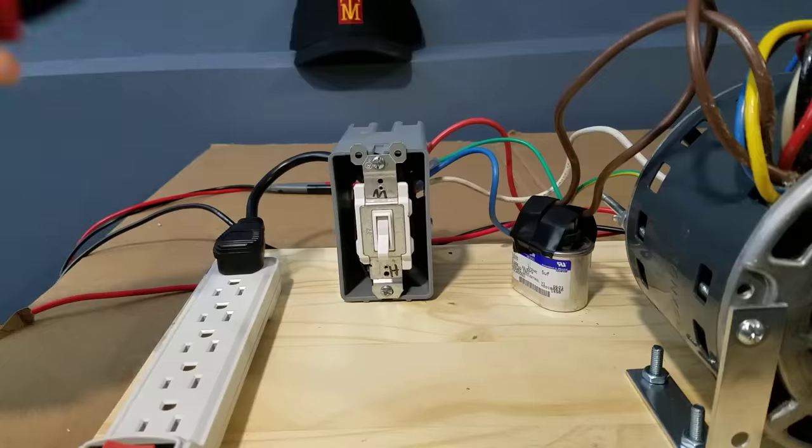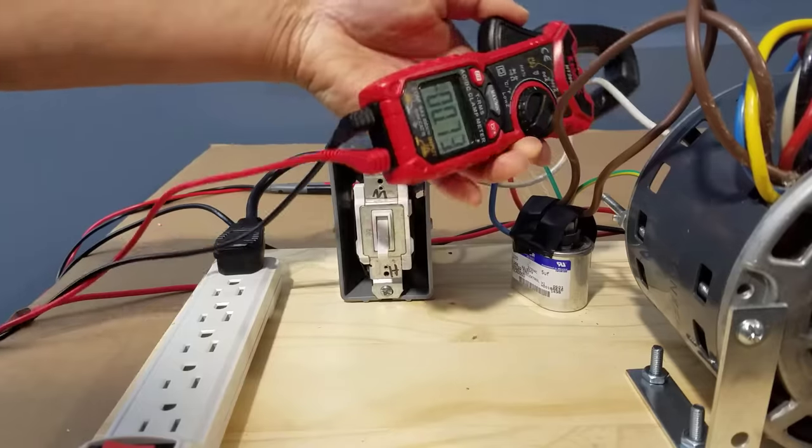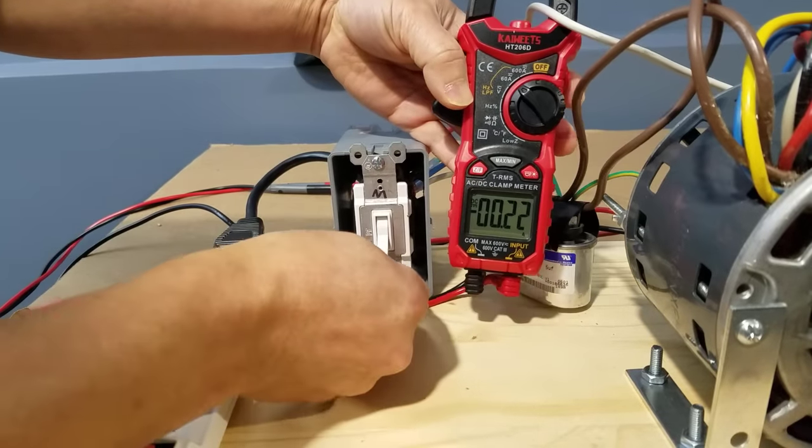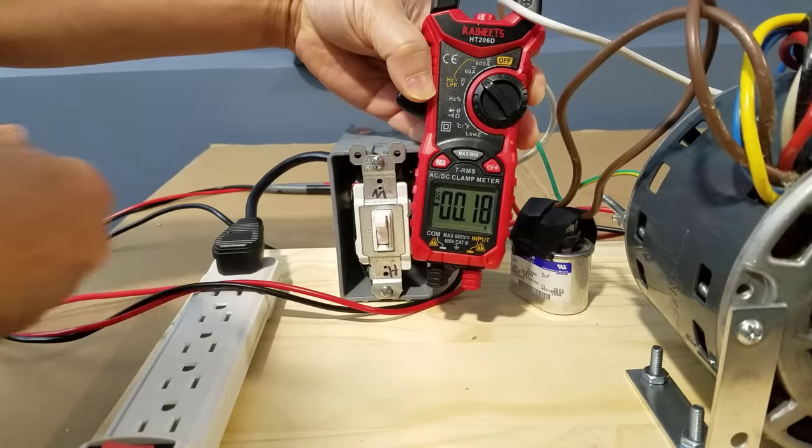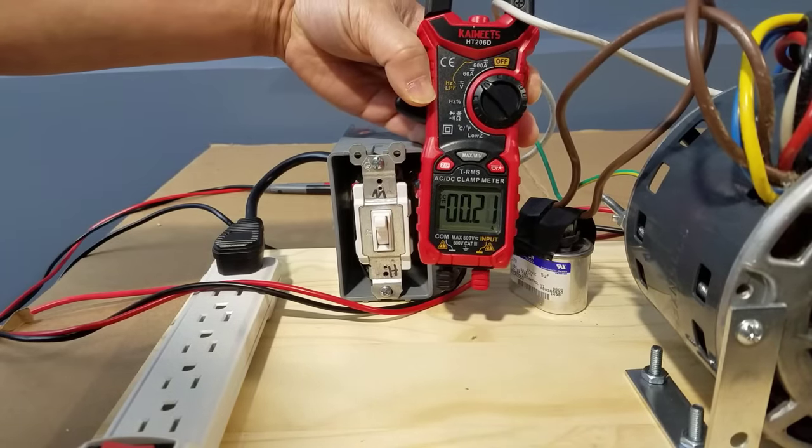Let's take a look at how much amperage the furnace motor draws. At medium speed, it draws about 0.22 amps. At low speed, it draws about 0.20 amps.